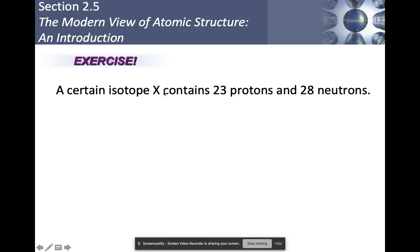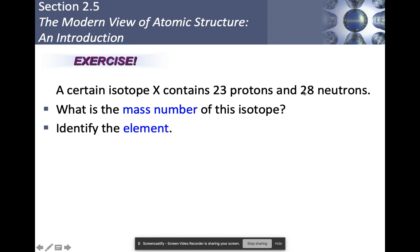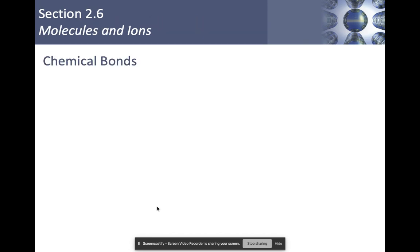So here we go. A certain isotope X contains 23 protons and 28 neutrons. What is the mass number of this isotope? That would give us a mass number of 51, because 28 plus 23 is 51. Now identify the element. Remember that the number of protons tells us what the element is. So if I look up number 23 on the periodic table, it is vanadium.